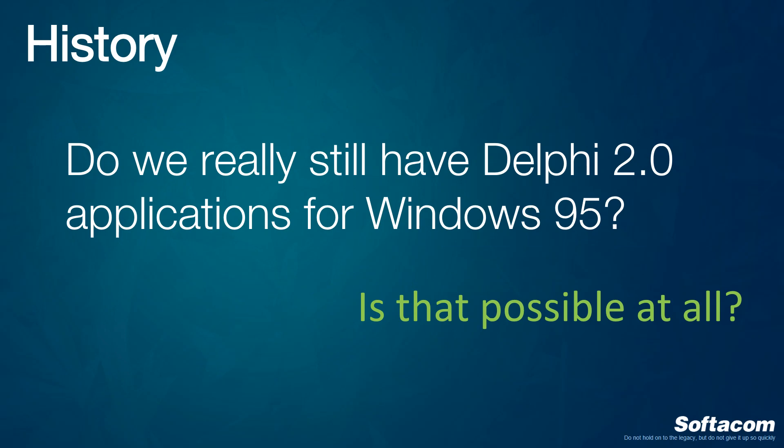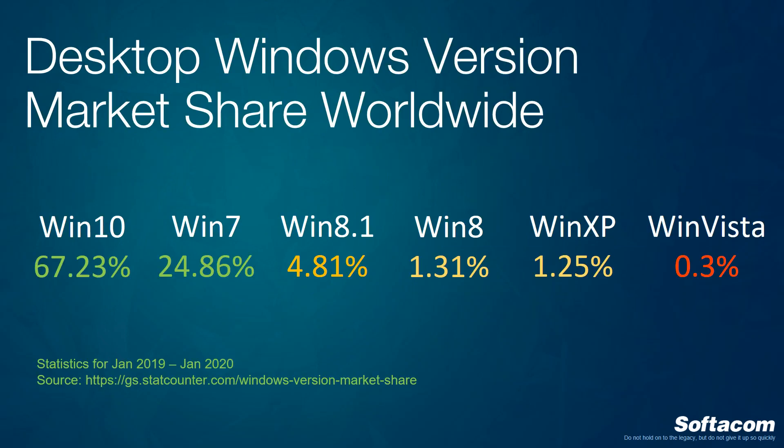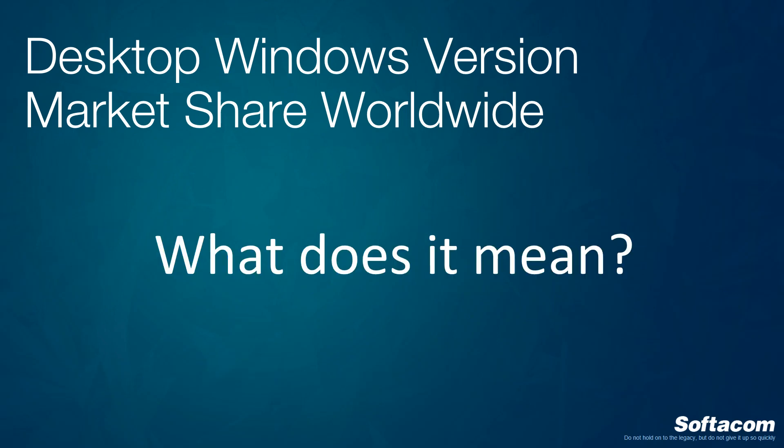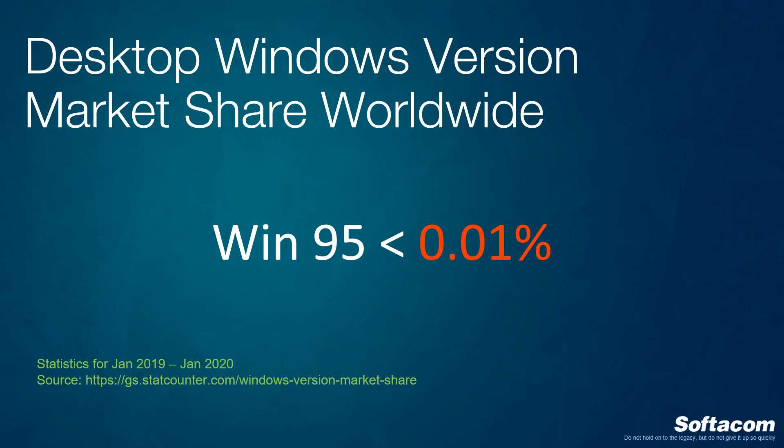If we talk about Windows 95 — is it really possible that such an operating system is still running and people are using it today? That is a really good question. If we look at the statistics of Windows usage today, we cannot even find numbers for Windows 95. And if we cannot find those numbers, it means that the percentage of this operating system is something around zero.